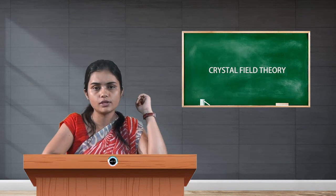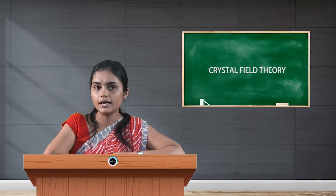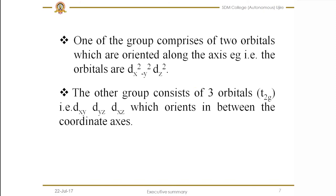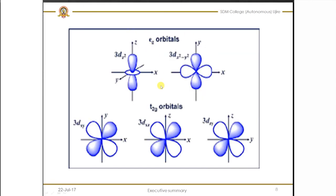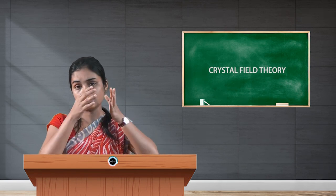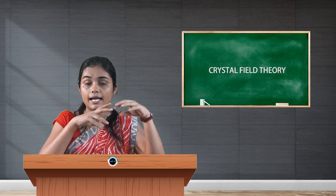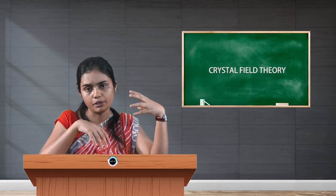The other group consists of three orbitals — dxy, dyz, and dxz — which orient in between the coordinate axes. This group is called t2g. You can see here that t2g orbitals are oriented between the coordinate axes: dxy lies between the x and y axes, dxz lies between the x and z axes. These are the two sets into which d orbitals are divided — eg and t2g — and this is very essential in order to study CFS.